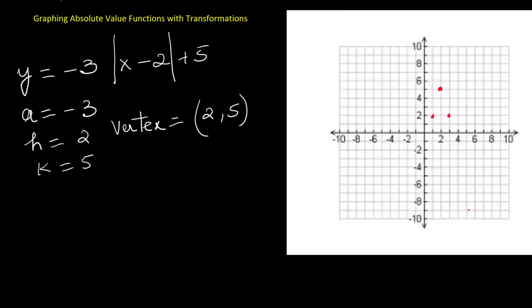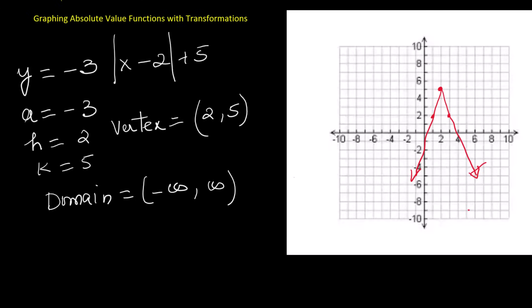Connecting these gives us a narrow downward-opening V. For this function, the domain is all real numbers, written in interval form as open parentheses negative infinity comma positive infinity close parentheses. The range is all values less than or equal to 5, written in interval form as open parentheses negative infinity comma 5 with a closed bracket.